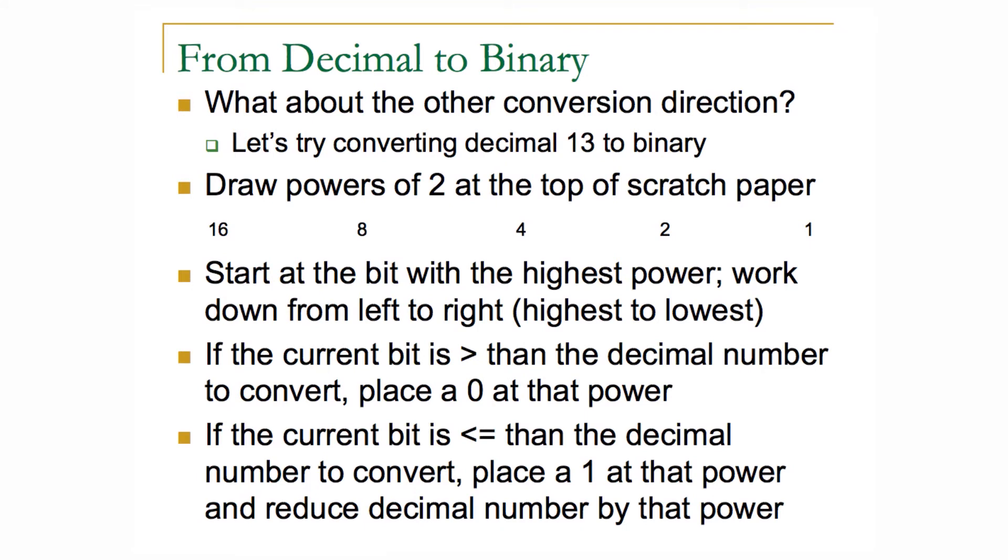we start at the most significant or highest powered bit, which in this case would be sixteen, and then we work from sixteen down to one from left to right. What we do is compare the current bit to the current decimal value we're looking for. In this case we're looking for thirteen, and the highest powered bit would be sixteen.